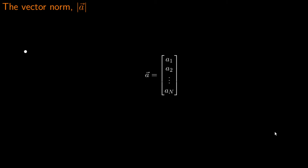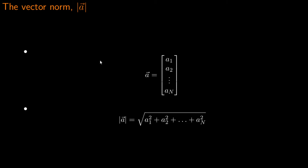The vector norm: if we have a vector A defined as elements A1 through to An, the norm of A — or the magnitude of A — is given by the square root of the sum of the squares of all of the elements. You will sometimes see the norm denoted with double bars; I'm using single vertical bars here because we are specifically talking about the Cartesian coordinate space. The norm gives a single scalar quantity that represents the magnitude, or length, of that specific vector.